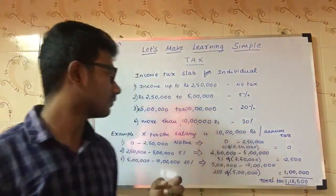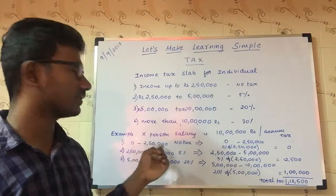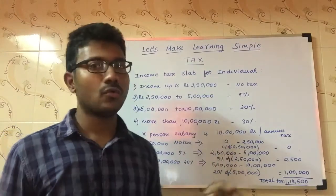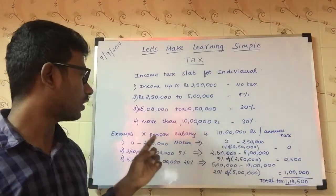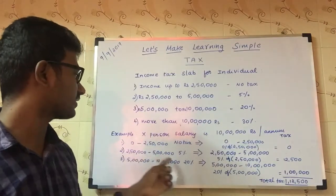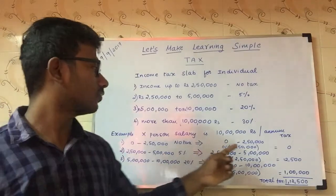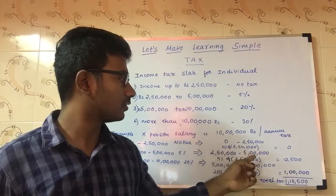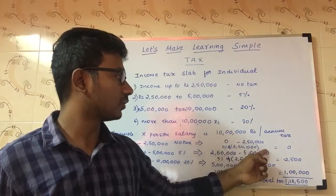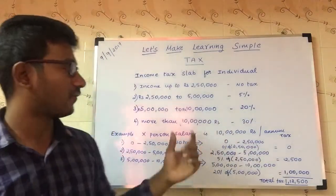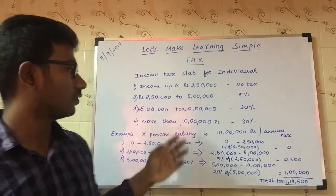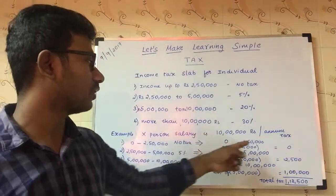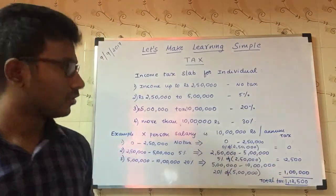So with 10 lakh rupees, we first fill the first slab up to 2,50,000. Once that fills, the remaining amount overflows to the second slab — 2,50,000 to 5,00,000 — which takes another 2,50,000. The remaining 5 lakh then fits into the third slab. So the 10 lakhs are split as: 2,50,000 in the first slab, 2,50,000 in the second slab, and 5 lakh in the third slab.